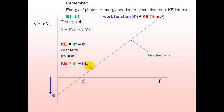To summarize this kinetic energy vs frequency graph: the gradient equals h, the y-intercept equals the work function, and the work function equals hF₀.